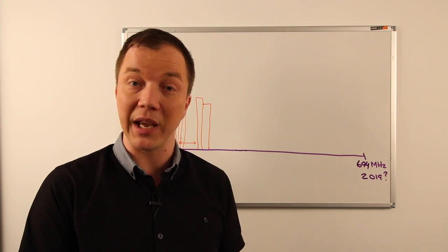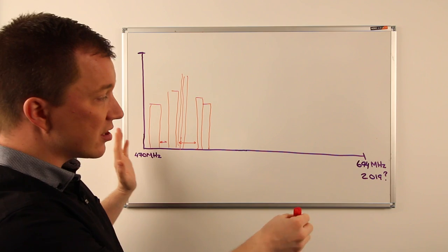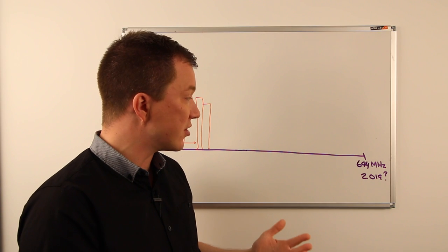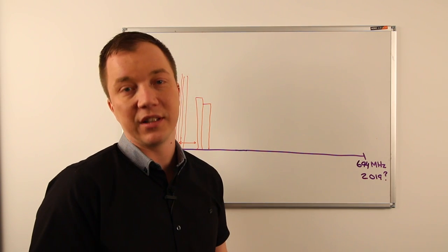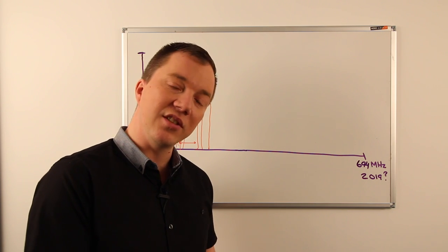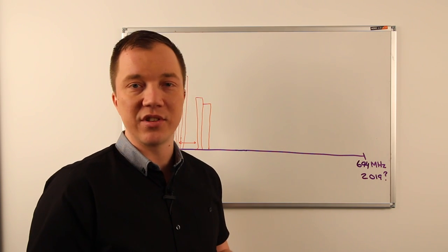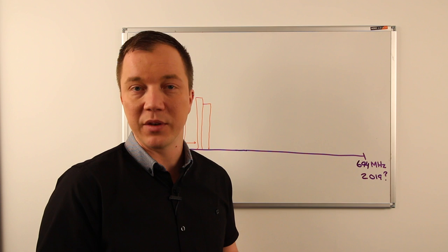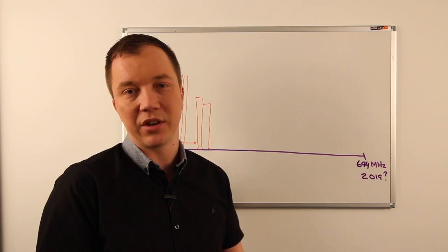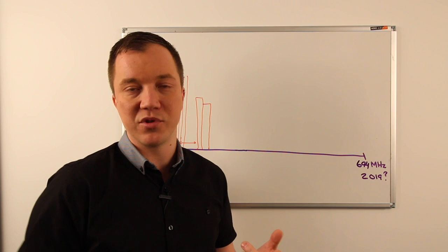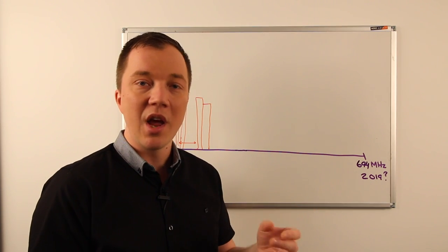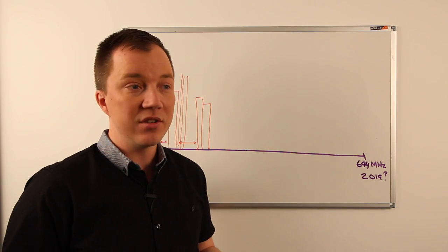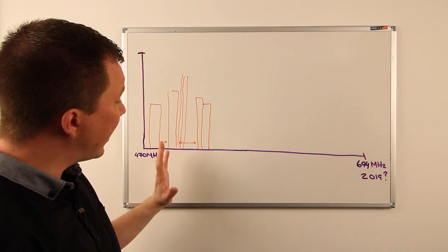In theory that sounds like a good idea, but you can see why this is of huge concern to the PMSE industry. With the clearance of 694 MHz and up, probably around 2019, we've already been left with significantly less UHF spectrum. White space devices add yet another service that we need to share the spectrum with. To put it into context: where do you typically see radio microphones? Mission critical events—political events, national anthems, sporting events, televised broadcasts. We need these devices to work, and adding yet another service is of serious concern.